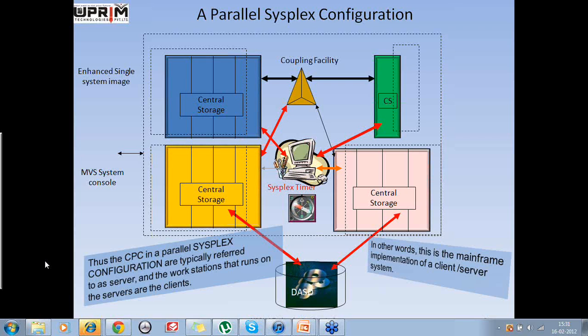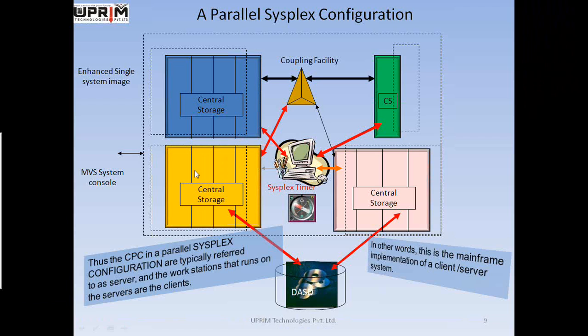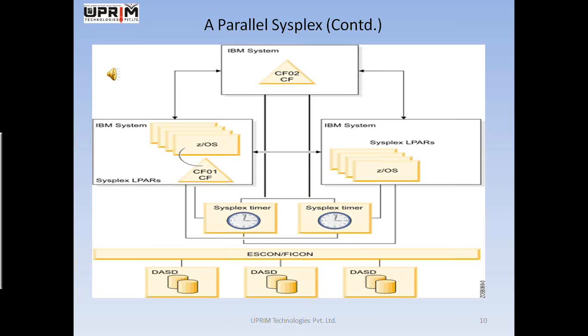In the parallel sysplex configuration, we typically refer to servers and the work sessions used to initiate programs that run on the servers, which are referred to as clients. In other words, this is the mainframe implementation of the client-server system, and we use this terminology throughout. The next screen, diagram number 10, basically talks about a parallel sysplex and how it is installed in today's world.